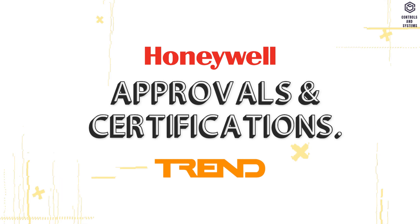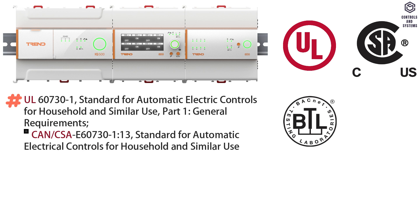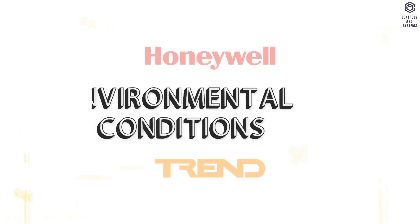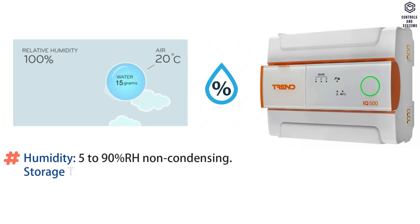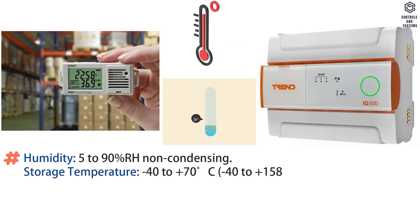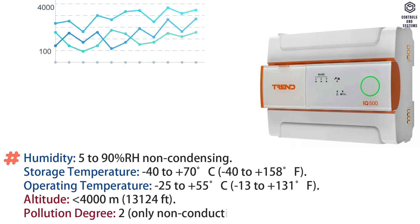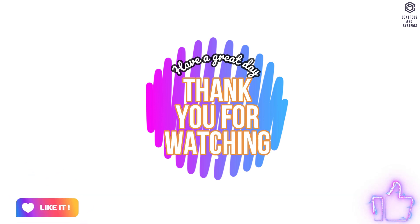Approvals and certifications: UL, Canon CSA, BTL listed certification, SOSO approved, CE approved, and FCC certification. Environmental data: humidity is 5 to 90% RH non-condensing, storage temperature is −40 to +70°C, operating temperature is −25 to +55°C, altitude is less than 4000 meters, pollution degree is 2. I hope this video is useful to you — thank you for watching, have a great day.